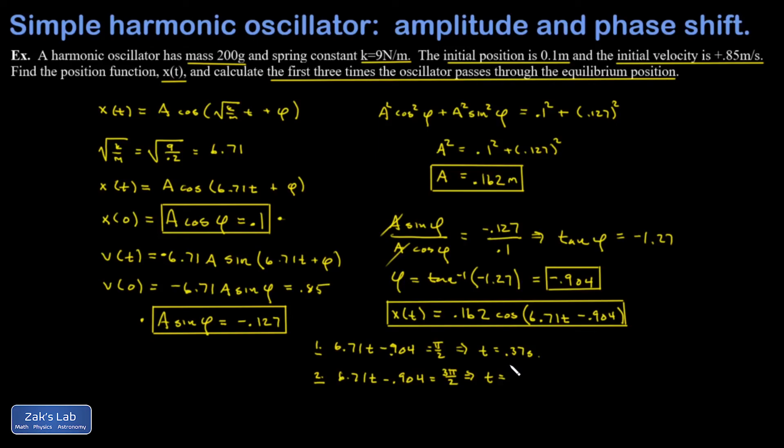The next time the cosine function vanishes is when its argument equals 3π/2. That happens at 0.84 seconds. The next time it vanishes, that's when its argument equals 5π/2. That happens at t equals 1.3 seconds.